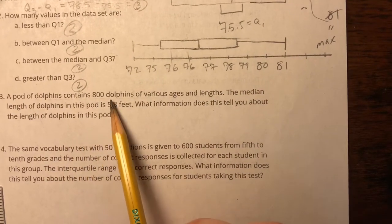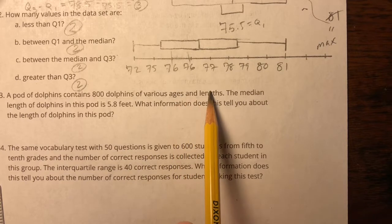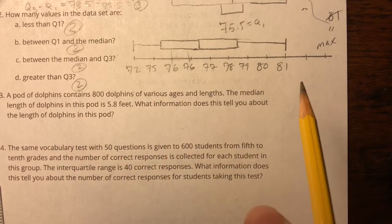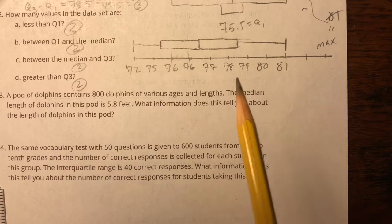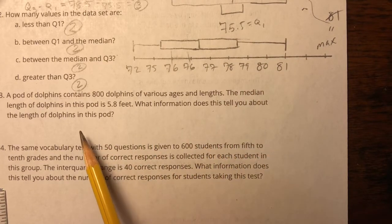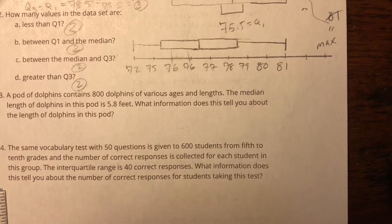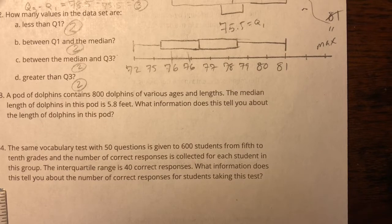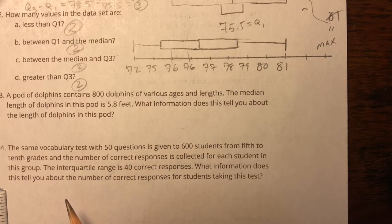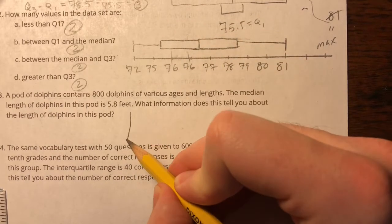All right. A pod of dolphins contains 800 dolphins of various ages and lengths. The median length of dolphins in this pod is 5.8 feet. What information does this tell you about the length of dolphins in this pool? Okay. So when we talk about a large set of numbers, like 800 dolphins